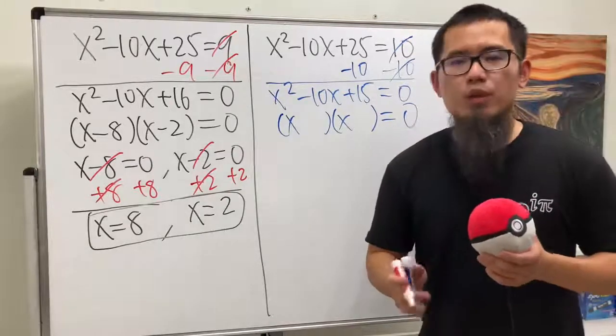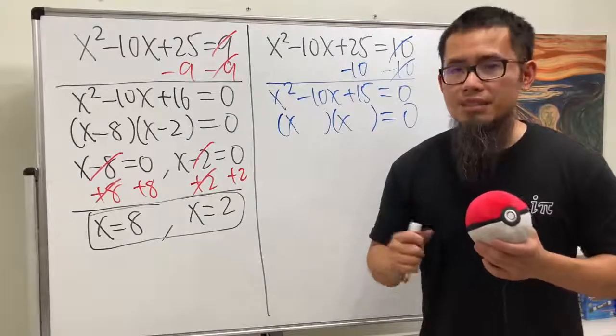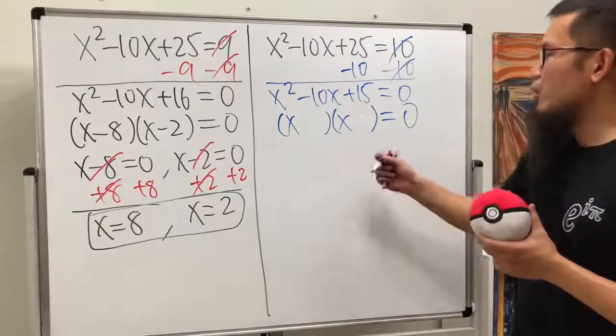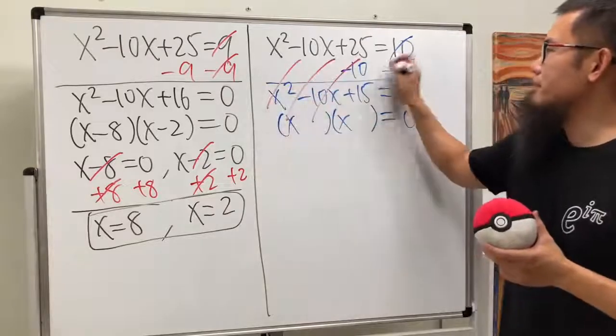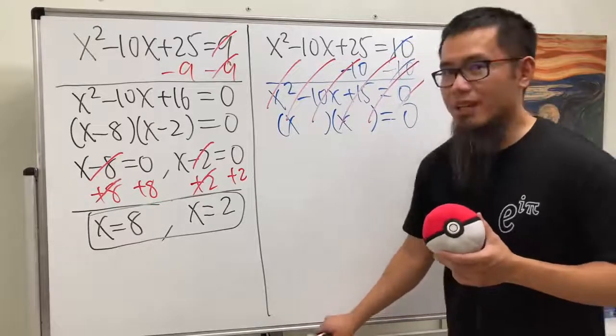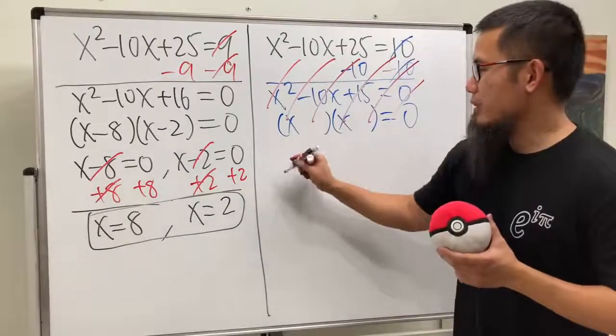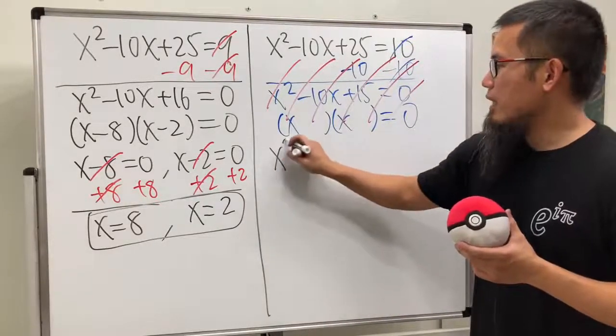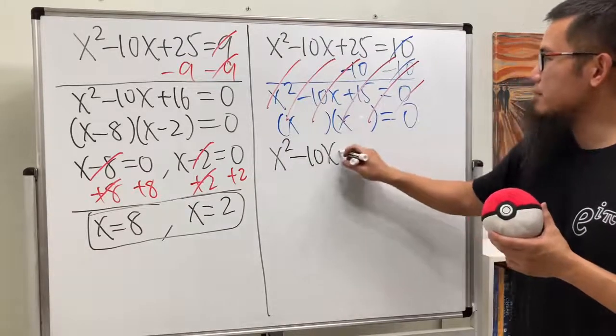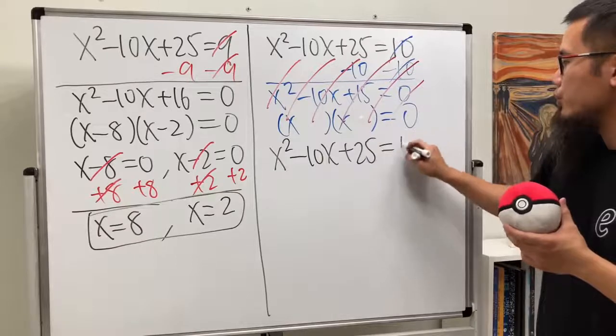Yes, we can use the quadratic formula, and yes, we can also do the completing the square method, but we don't have to do any of that. Surprise, huh? So, check this out. This is how you can do it without quadratic formula or completing a square. Let's look at the equation again. x squared minus 10x plus 25, that's equal to 10.